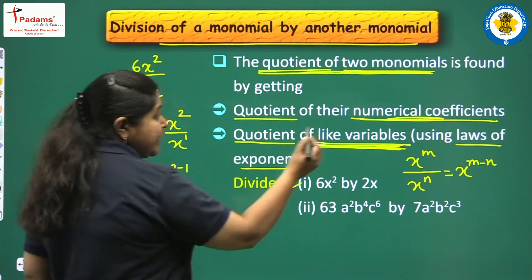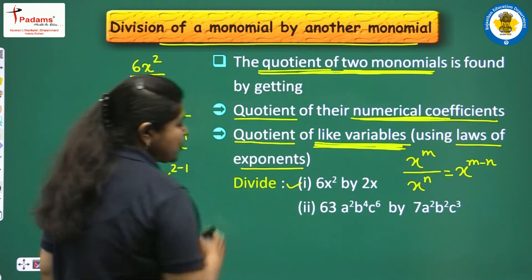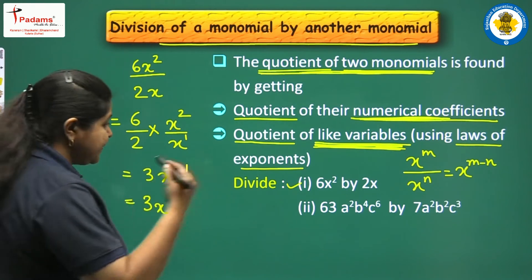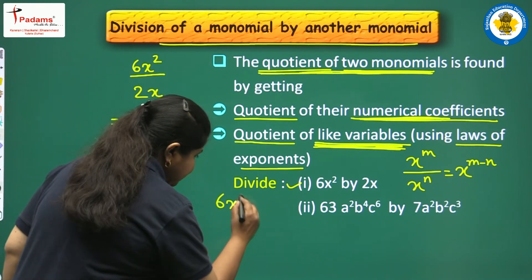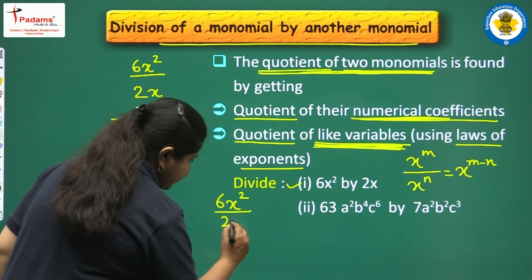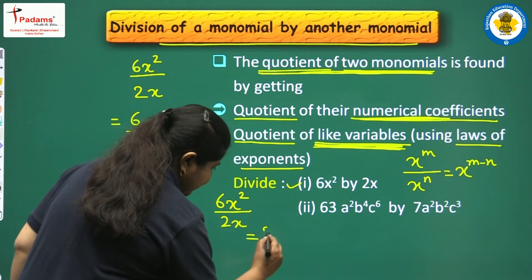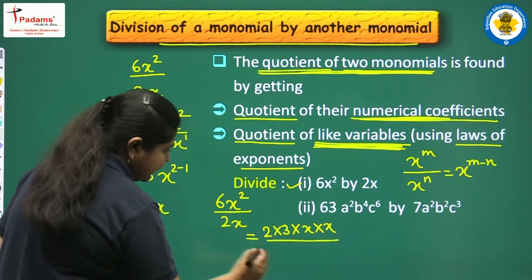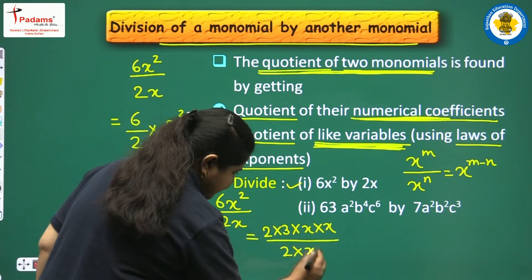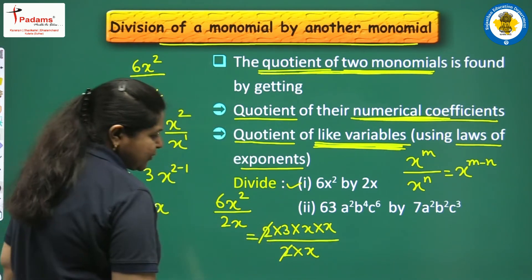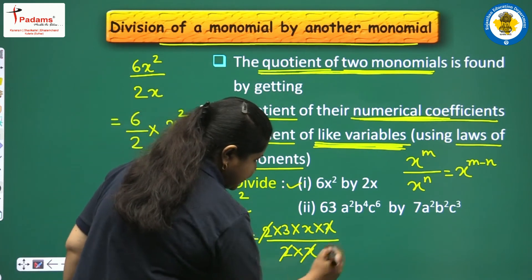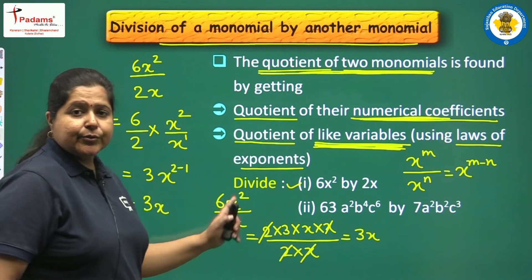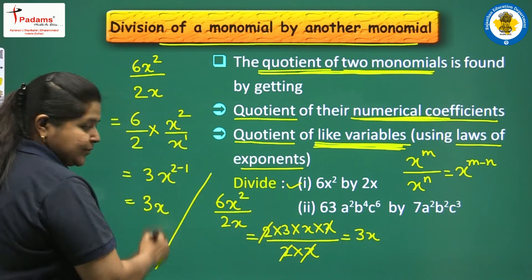You can also do it by expressing each monomial in its irreducible form. Write 6 as 2 into 3, and x² as x into x, then divide by 2 into x. Cancel the common factors — 2 and 2 cancel, one x cancels — and 3x is the answer. Both methods give the same result.